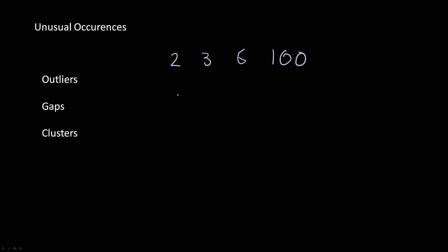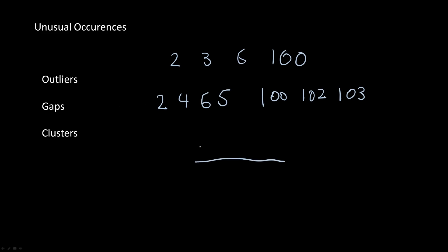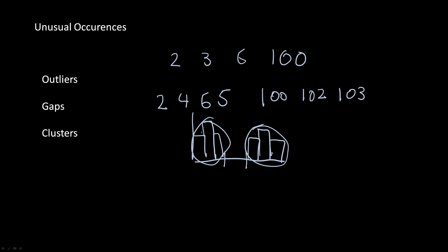There are also gaps in a data set. For example, if we have clusters of numbers like 2, 4, 5, 6, and then 100, 102, 103, we have gaps or clusters in the data set. This would look like a histogram with a giant gap in the middle and clusters on each side — a gap between these values and clusters of values on each side.